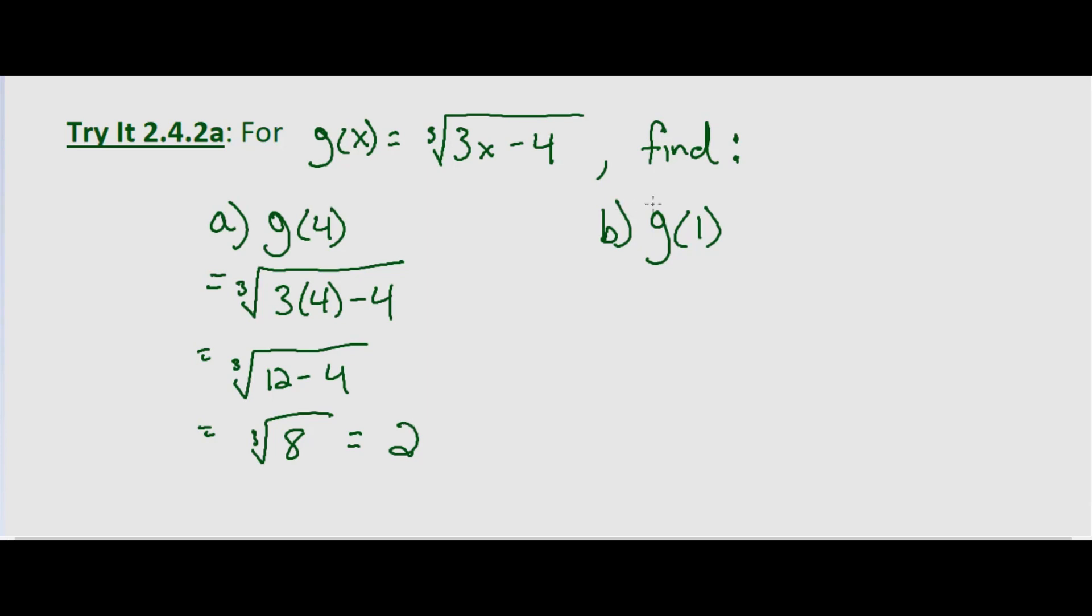Now part b, we're asked to find g(1). The process is the same. We just substitute 1 for x and simplify. So the cube root of 3x minus 4, so 3 times 1 minus 4, which equals the cube root of negative 1, which equals negative 1, because negative 1 cubed is negative 1.